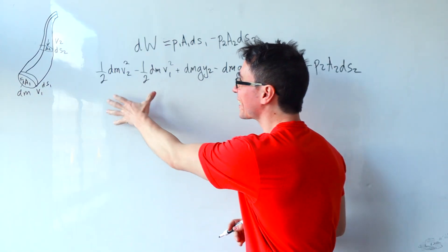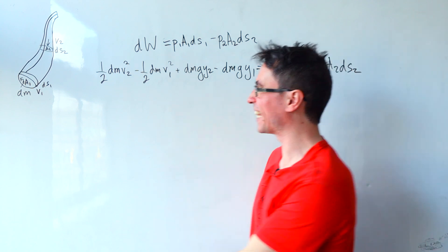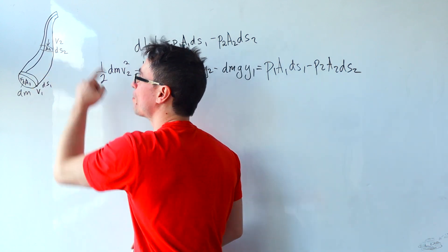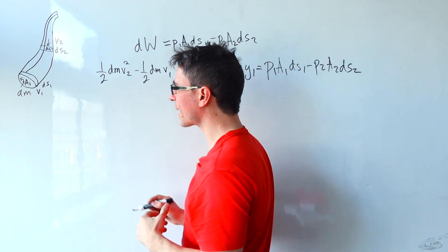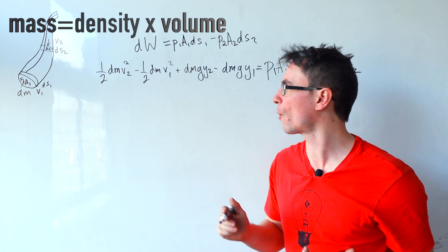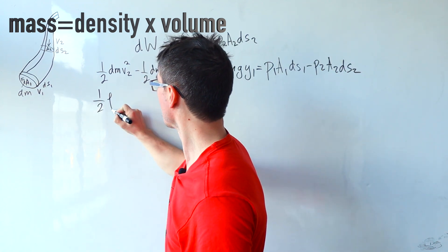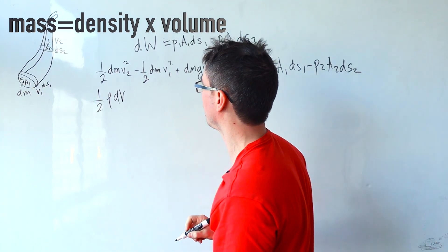Please note that in this case we are assuming that this is an incompressible fluid and the same amount of mass per second flows through both of these regions. So mass is equal to density times volume. So we can just rewrite this in terms of the density. So it's going to be rho times that tiny volume. Let's call that dv.